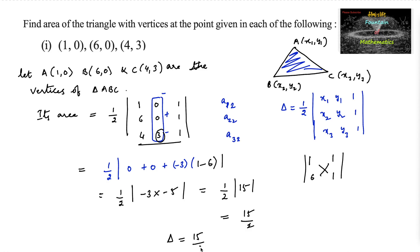So we can say area equals 15/2 square units. The area of triangle ABC with the given vertices (1,0), (6,0), and (4,3) is 15/2 square units, that is 7.5 square units.